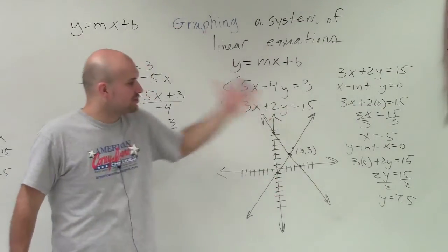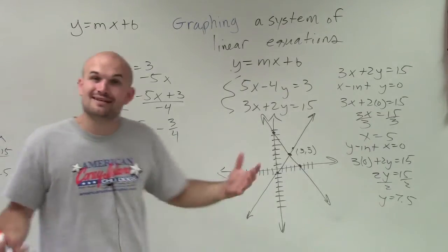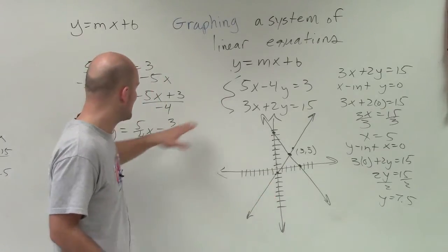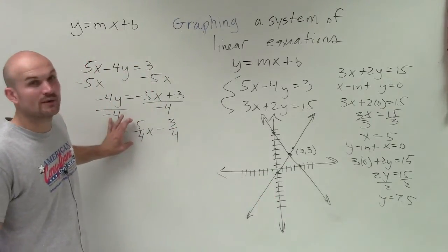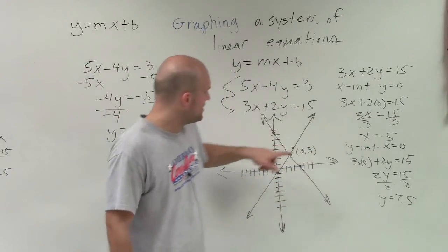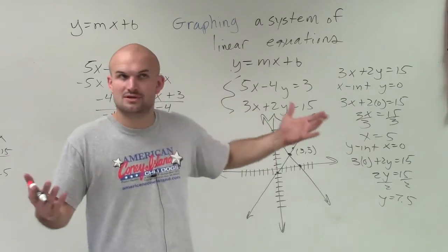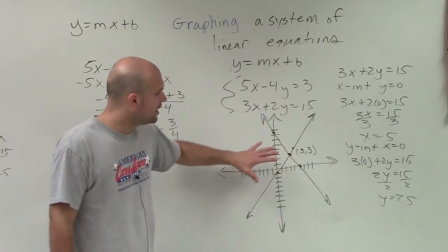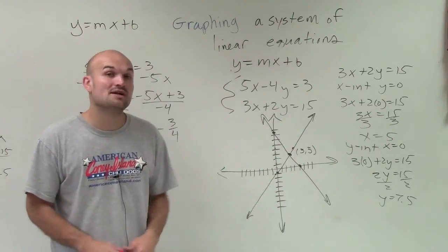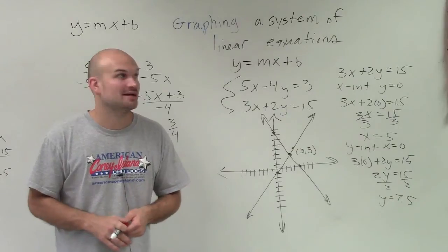I just wanted to show you two different methods and how to use this with fractions. When you have a problem like this, fractions make it difficult, but remember you're still going up your units 5 over 4. If you're using an intercept, remember 7.5 is just going to be halfway between 7 and 8. Since we have one solution, we know we have a consistent system, and it is going to be independent.